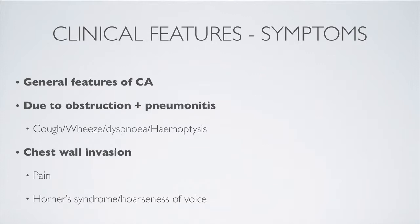The other major process is chest wall invasion. This can cause local pain if the ribs or muscles are involved, or it can cause Horner's syndrome or hoarseness of the voice. Horner's syndrome or hoarseness suggests invasion of the sympathetic chain or the recurrent laryngeal nerve.